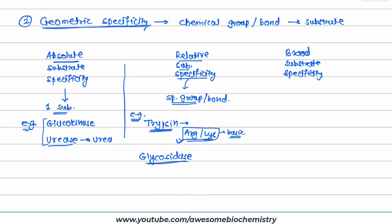The second example is glycosidase. Now this enzyme, what it does, glycosidase breaks down glycosidic bond. So this glycosidase is bond specific, and this trypsin has specific group related specificity.